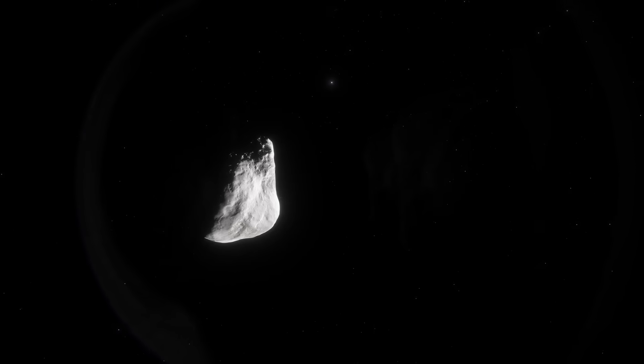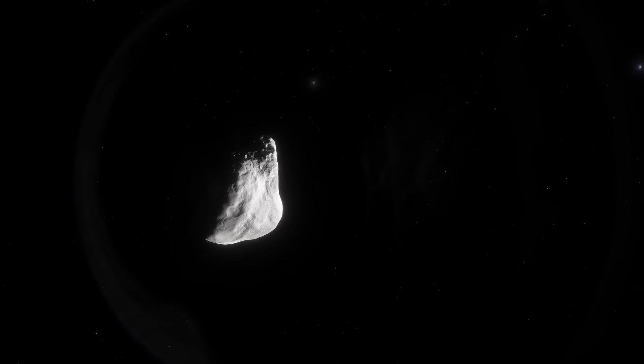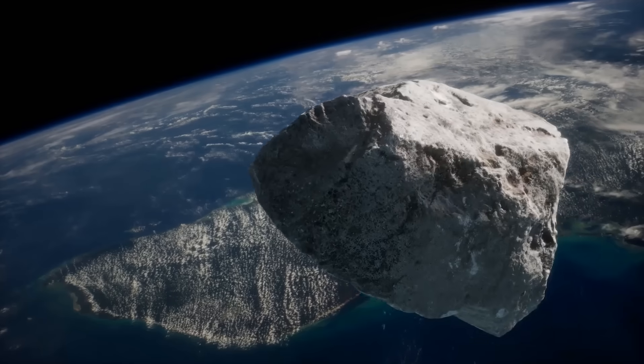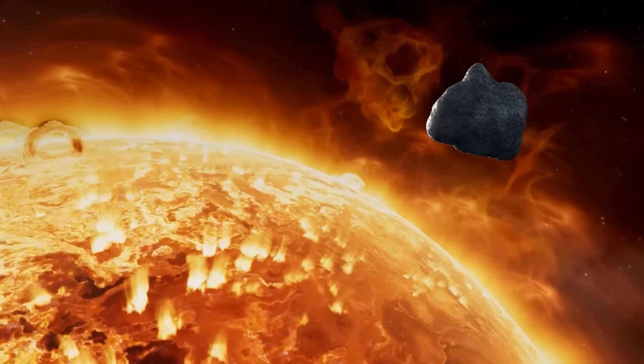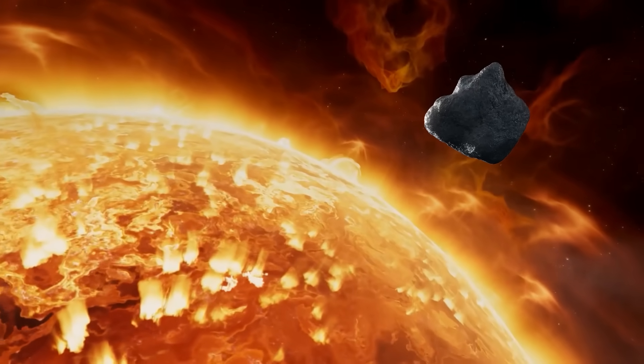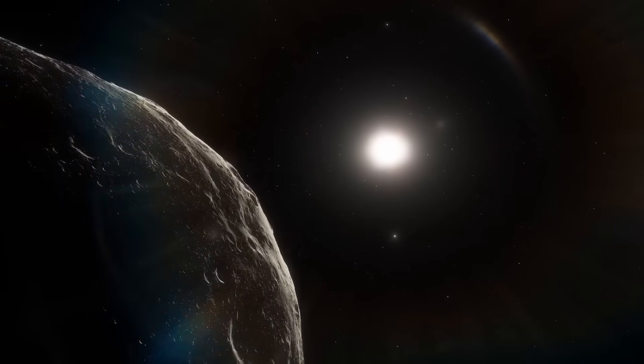The simulation showed 3i Atlas was using the gravitational pull of Jupiter and Saturn, not just as a slingshot, but as a braking system, bleeding off its immense interstellar velocity to settle into a stable, observational orbit around our sun. To put it mildly, this object was navigating.